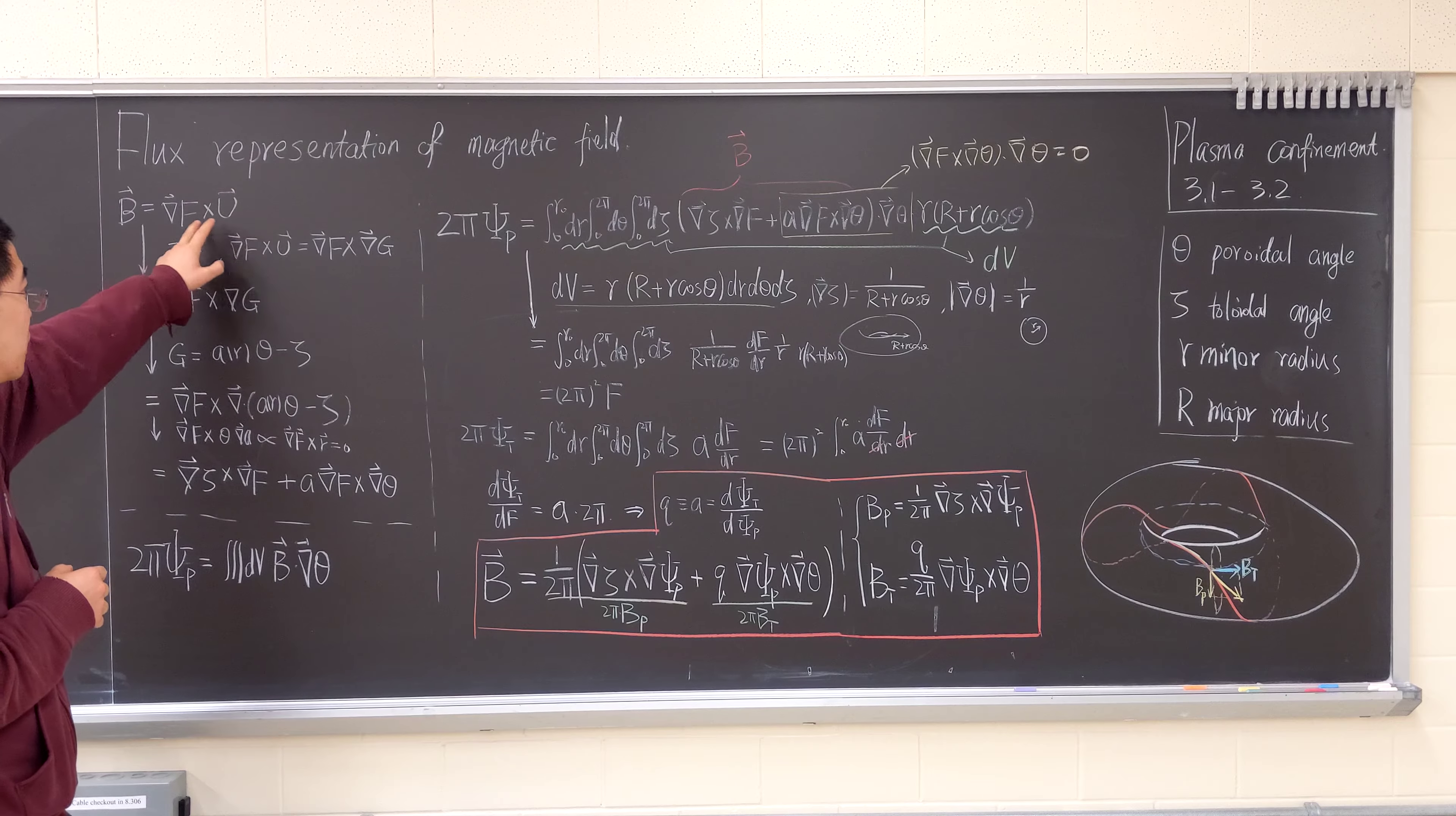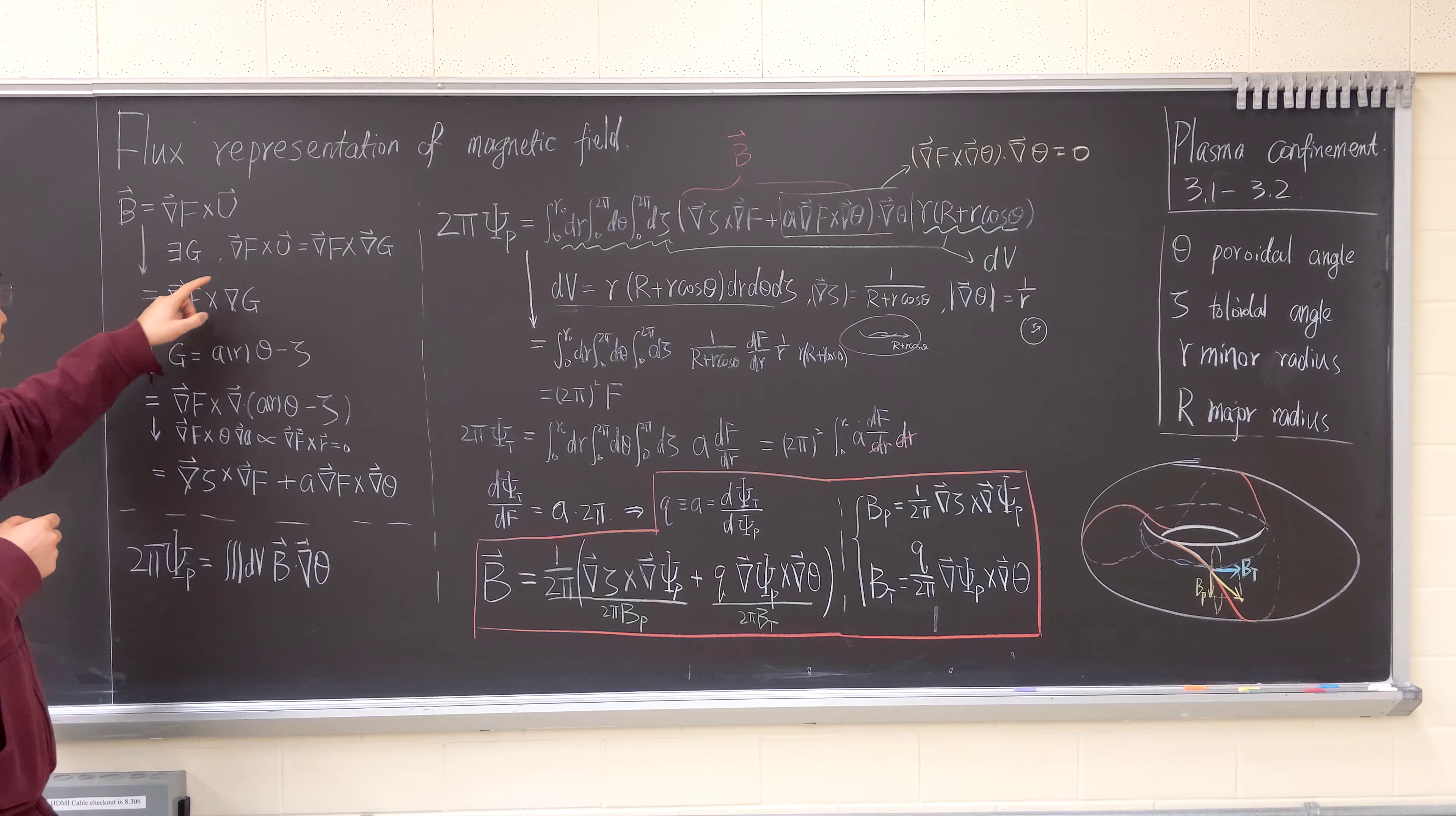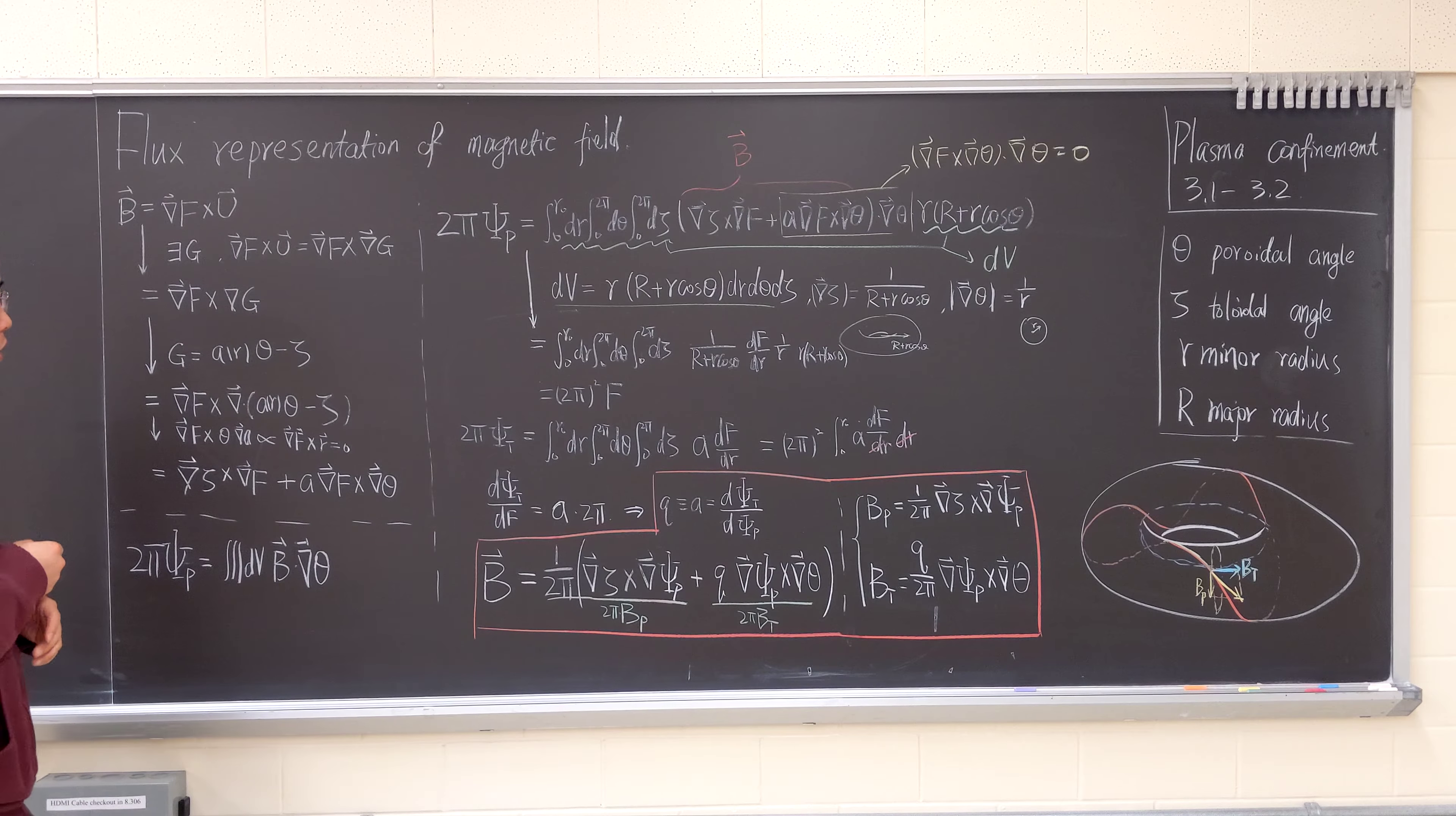There exists a U and F, where F is a flux label to express a magnetic field. And if we can have this, then there always exists a G such that this statement holds. The B can be expressed in terms of this.